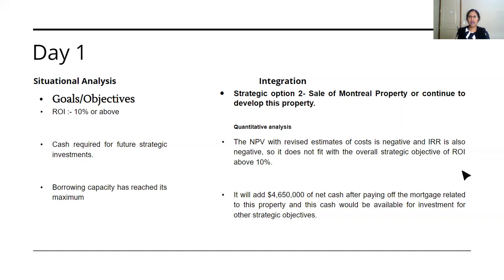The second integration point: when you sell the Montreal property, it adds a certain amount of cash after paying off the existing mortgage. That cash now becomes available for future investments. So if there's another option to invest in, this is how you tie it back — the borrowing capacity is maxed, so you need cash, and the cash from the property sale can be utilized into another investment.